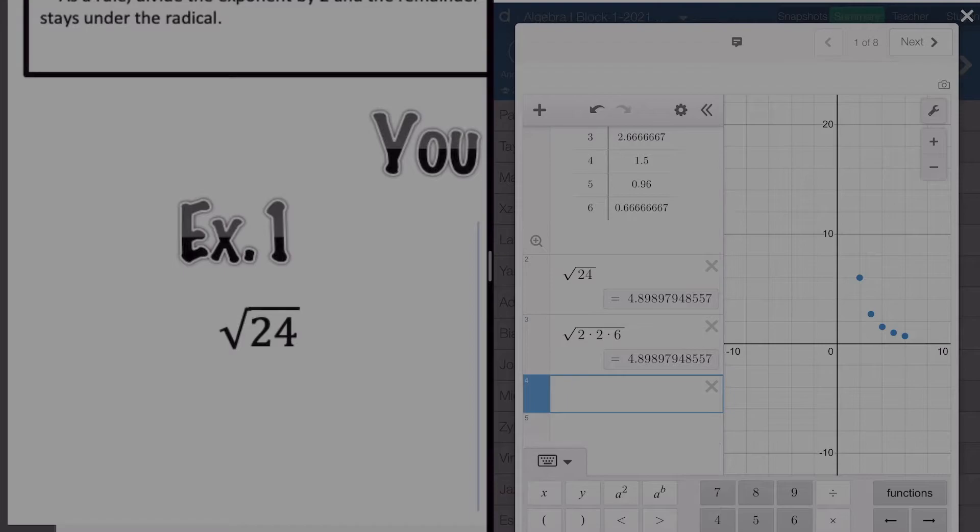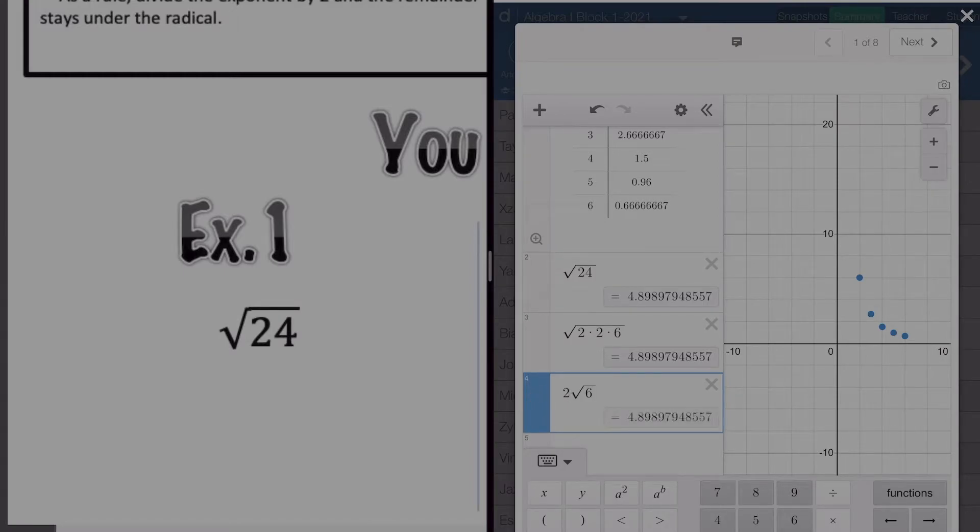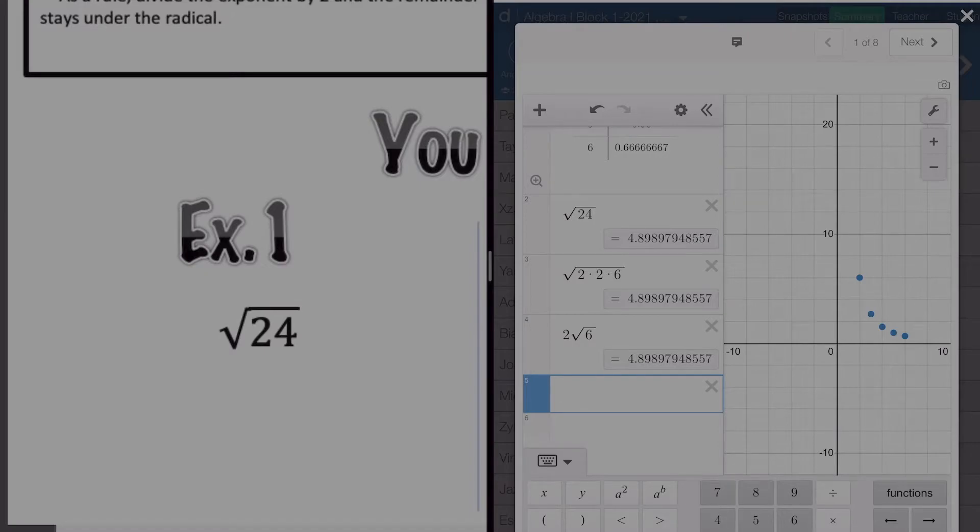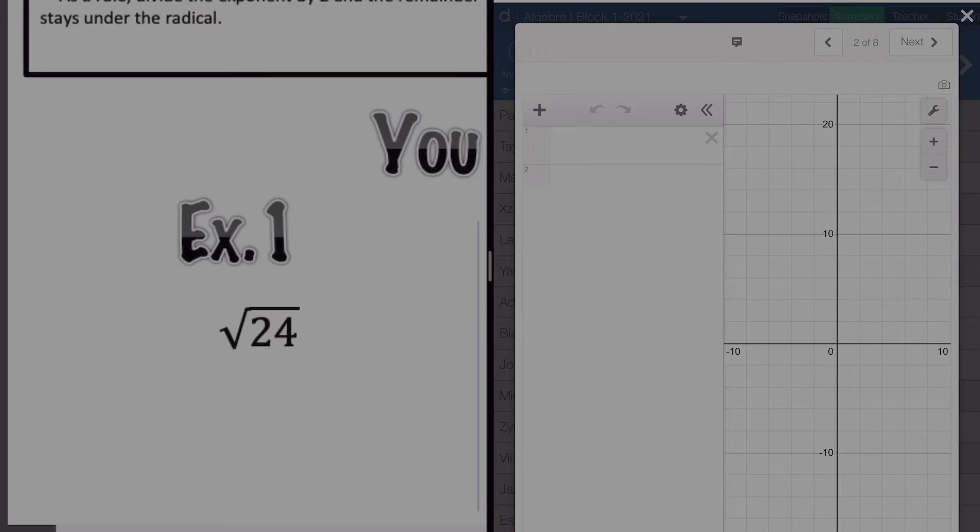Once you have squared the 2, then you know you can pull out a pair, so 2 goes on the outside and 6 goes on the inside. That is your final answer. We've done number one. Alright, let's go over to number two.